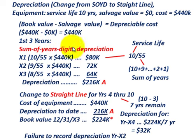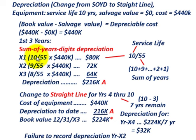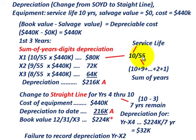For the first three years we're going to use the sum of years digits for depreciation, then switch to straight line after the third year. For year X1, you take the service life remaining — 10 years — and divide it by the sum of years digits. The sum of years over a 10-year life is 10+9+...+2+1 = 55. So the fraction for year X1 is 10/55 times $440,000, the depreciable cost.